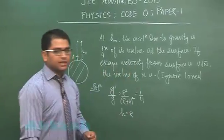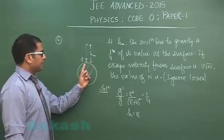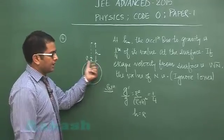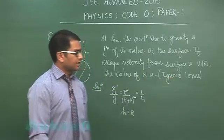If the escape velocity from the surface is v root n, so the escape velocity from the surface has been related in terms of v, and we need to calculate the value of n. And of course, the losses have to be ignored.